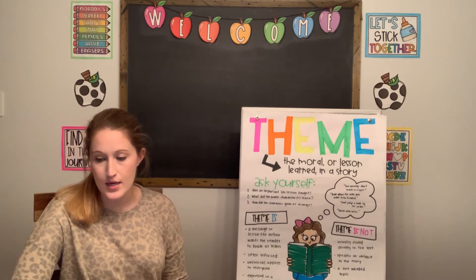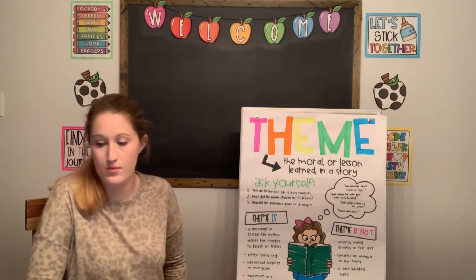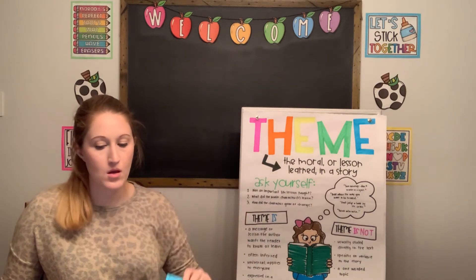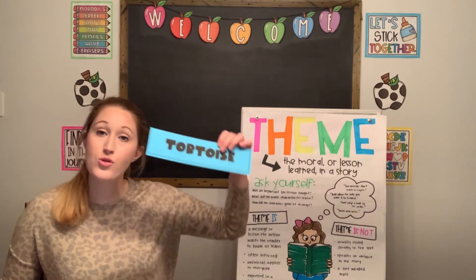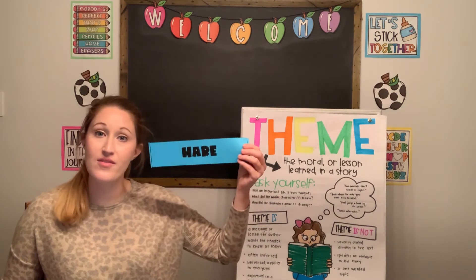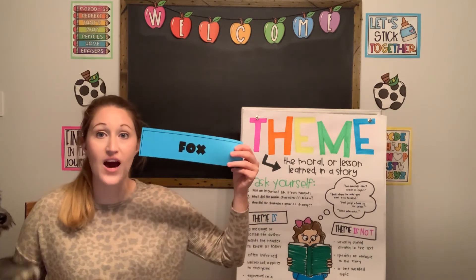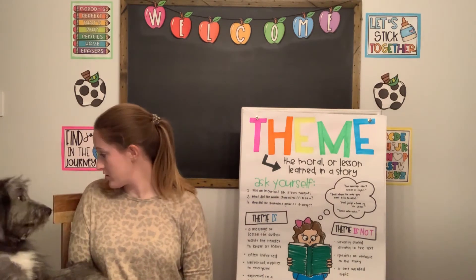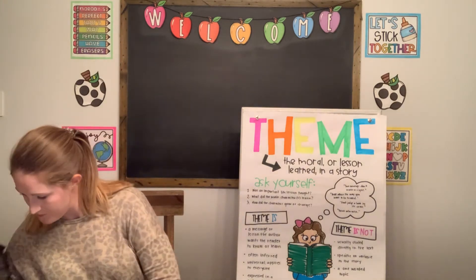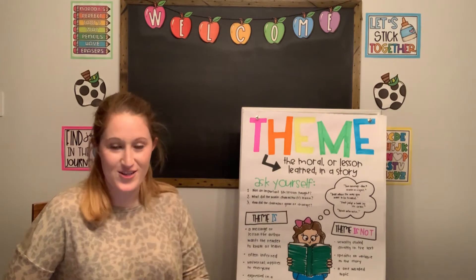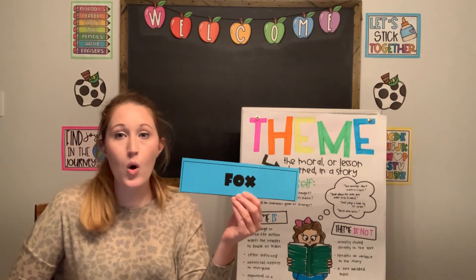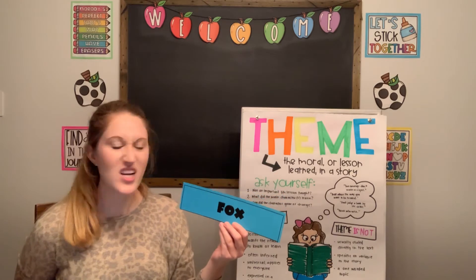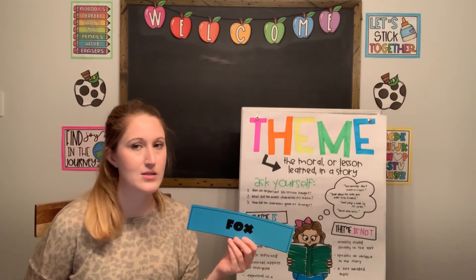Our book today is The Tortoise and the Hare. We have some characters: we have a narrator, and we have the tortoise. As I read the different characters, I'll hold things up to help you figure out who those different characters are, because it's kind of hard to tell when it's just one person. One-act plays are pretty tricky.